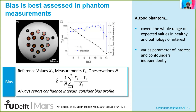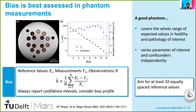A good phantom for assessing bias covers a whole range of expected values, both in healthy tissue and in the pathology of interest, and also attempts to vary the parameters of interest mostly independently from confounders. As a general rule of thumb, we should aim for at least 10 equally spaced reference values in a phantom study when considering bias.